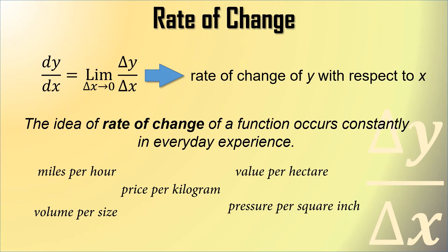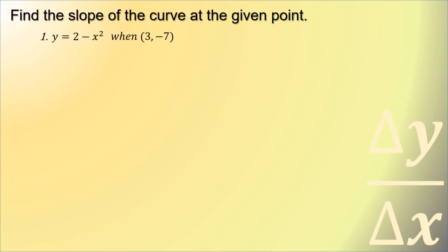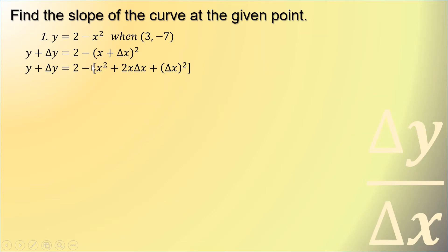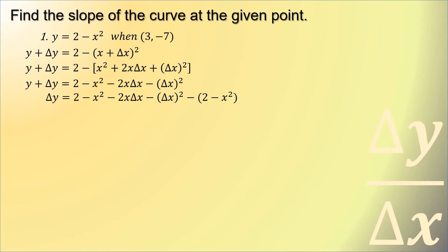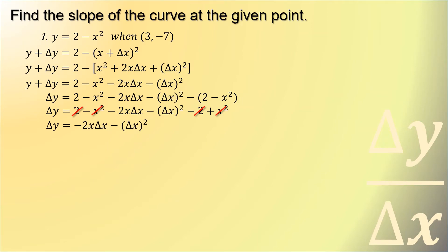For example, find the slope of the curve at the given point. Our curve has the equation y = 2 - x² at the point (3, -7). The first step is to replace y by y + delta y and x by x + delta x, and expanding the quantity squared, that is x² + 2x·delta x + delta x². Then distributing the minus sign across the three terms inside the bracket gives negative x² - 2x·delta x - delta x².